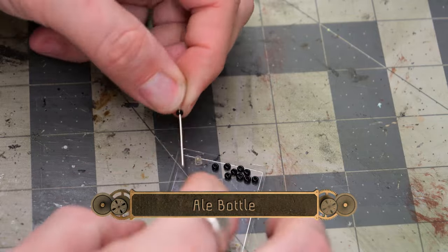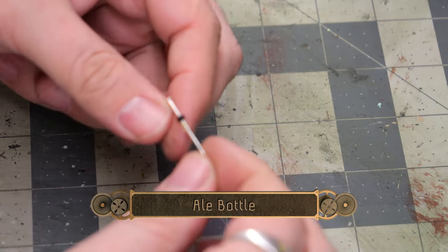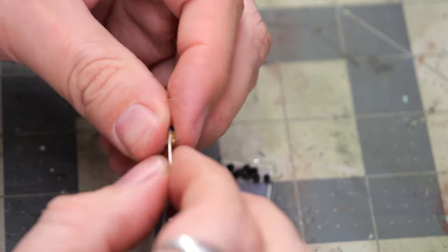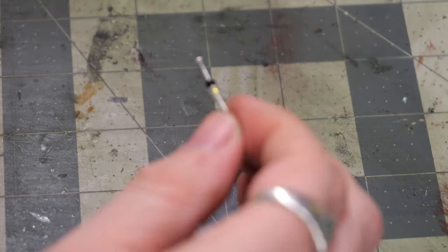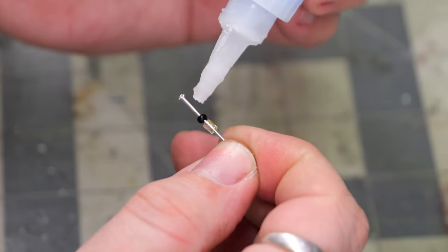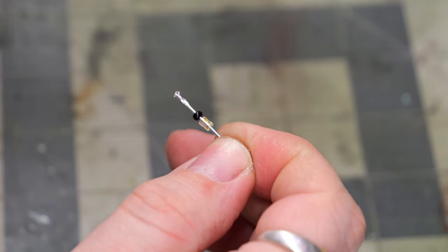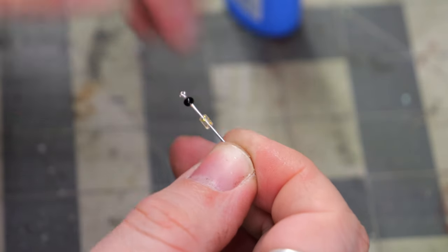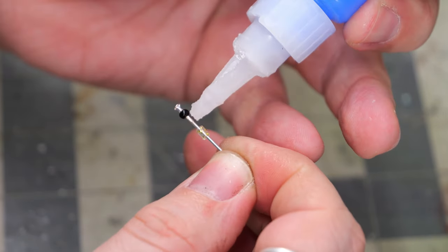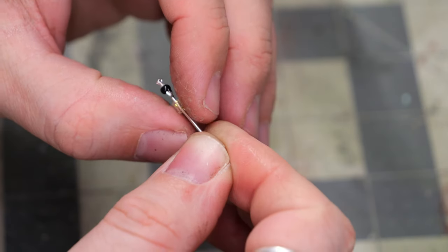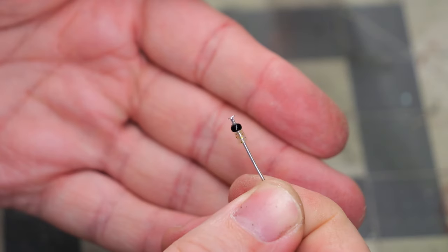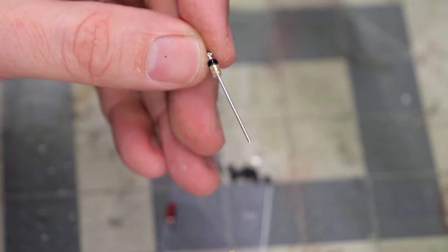We're going to start things off by making an ale bottle. I'm using a decently sized Toho seed bead and a micro iron bead, or mini iron bead, to kind of form the stem of the bottle. We're just going to put a little dab of super glue and slide the seed bead up, and that's going to be our cork.